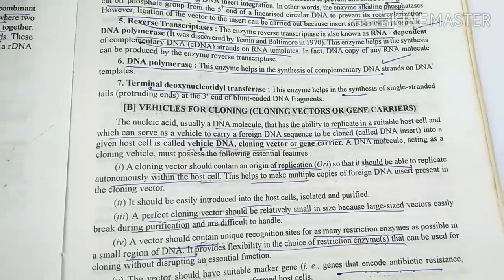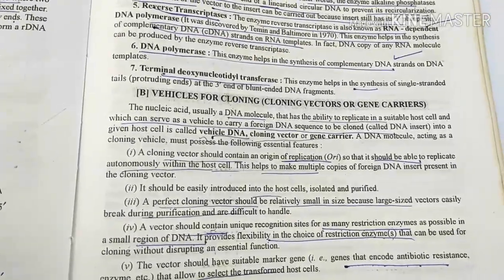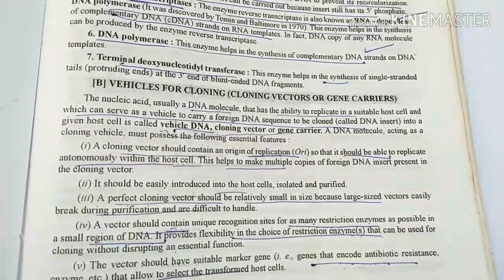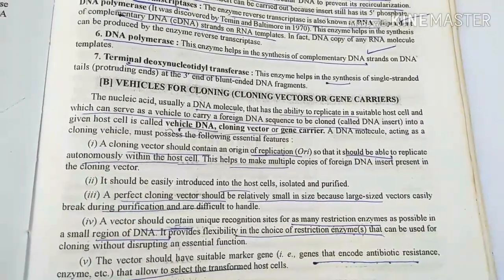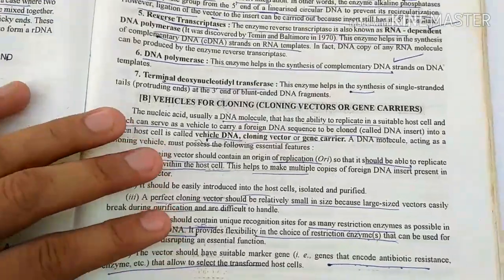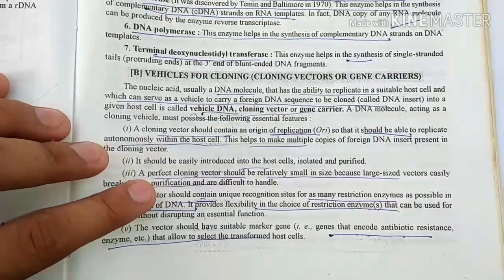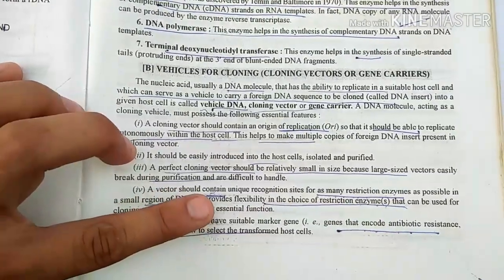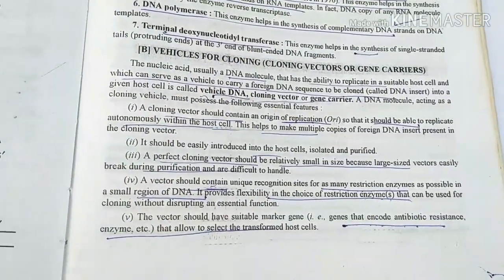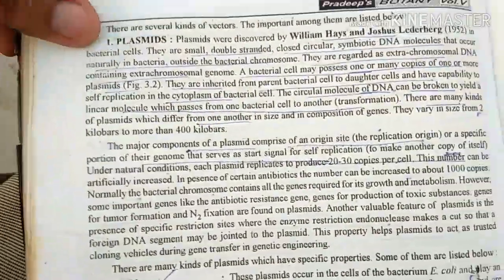The second tool is the cloning vector. The DNA that has the ability to replicate in the host acts as a vehicle — this is called vehicle DNA, cloning vector, or gene carrier. A cloning vector should contain an origin of replication and should be easily introduced into the host cell. It should be relatively small in size, contain a unique sequence, and have a suitable marker so we can find or identify the inserted gene.